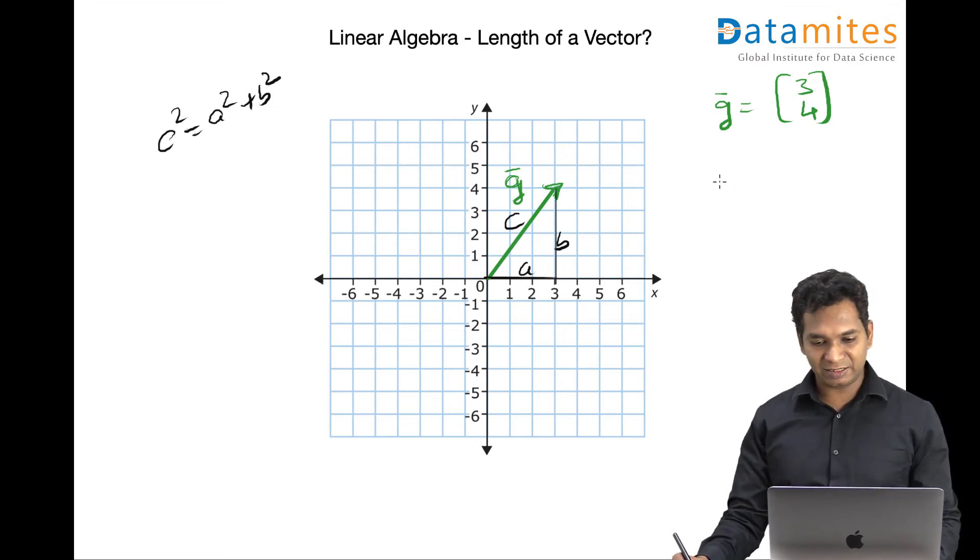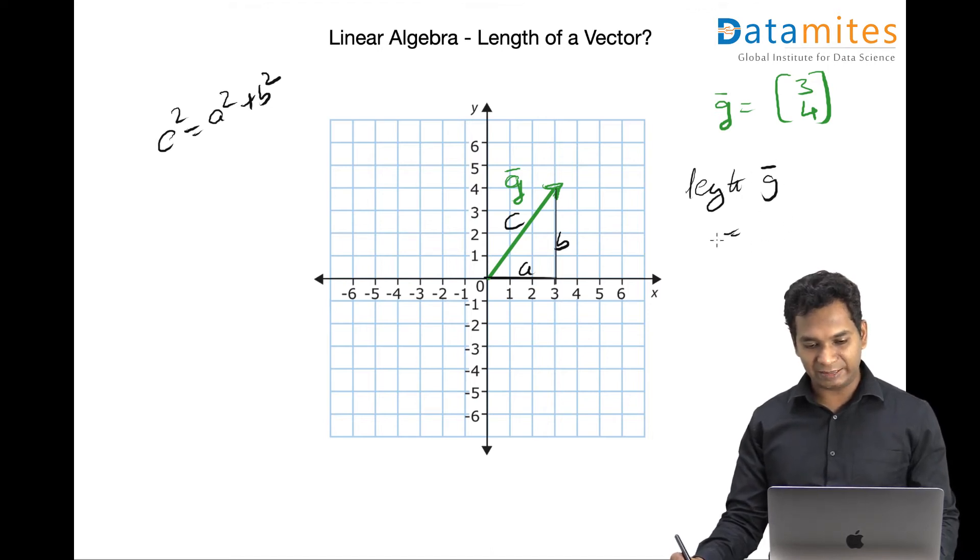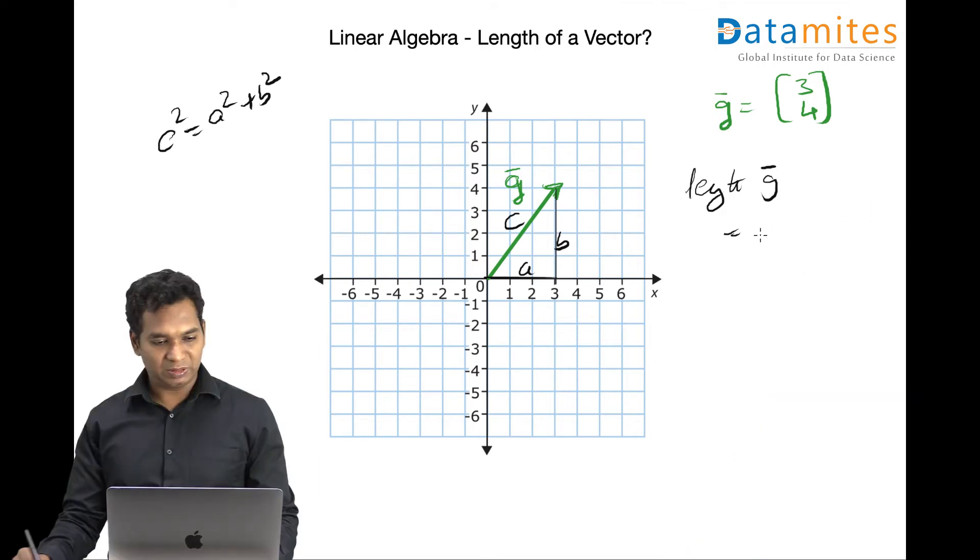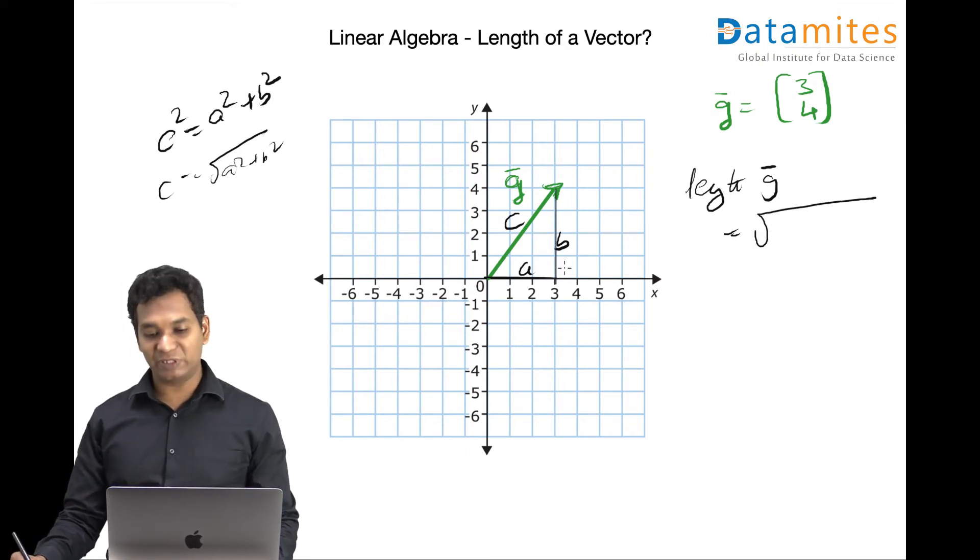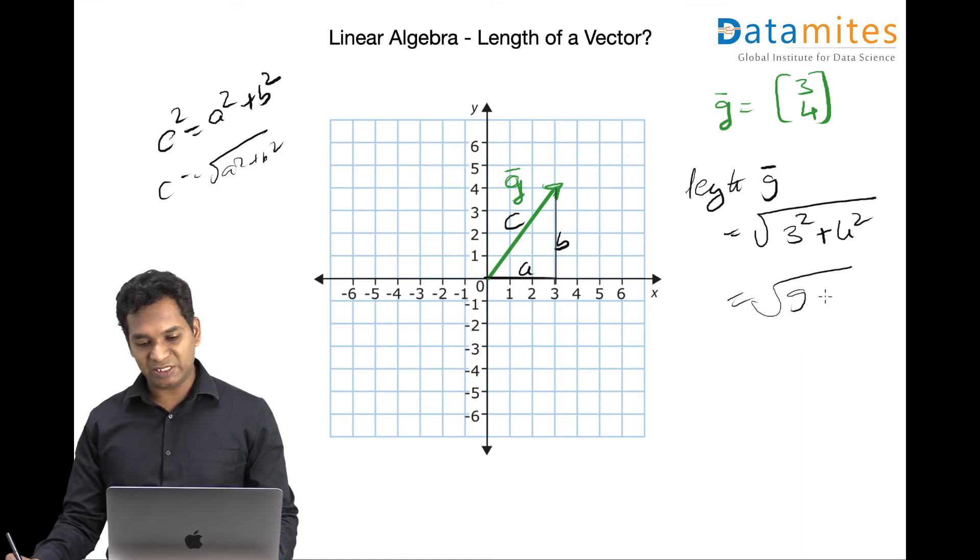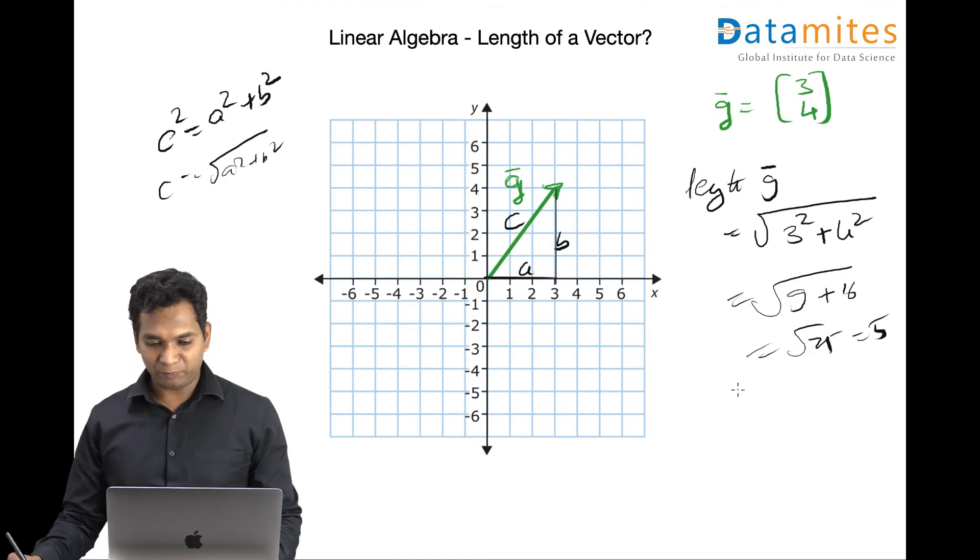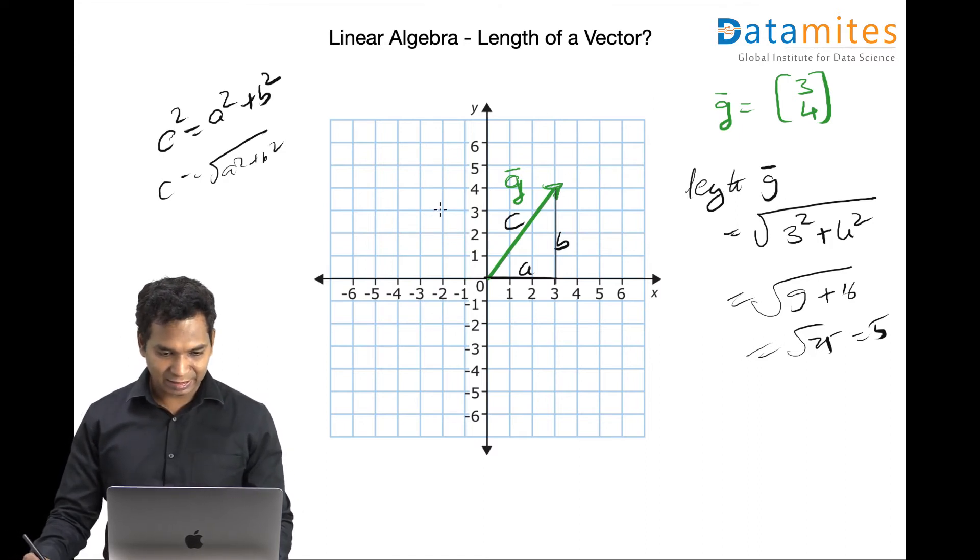That's what we can apply straight away. In this case, my length of vector g is equal to c equals square root of a square plus b square. And a is nothing but 3 here, number of units in x-axis, so 3 square plus number of units in y-axis, 4 square. We know these values, it lands up to 25 and square root is 5. So, length of my g vector is actually 5.